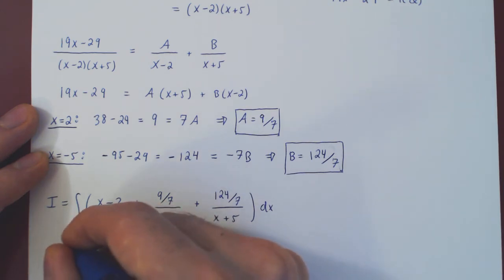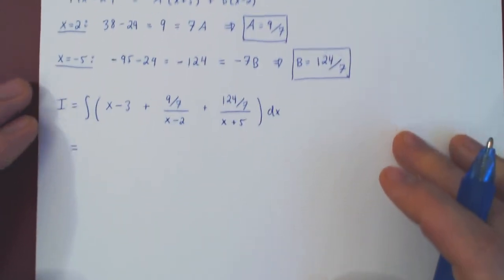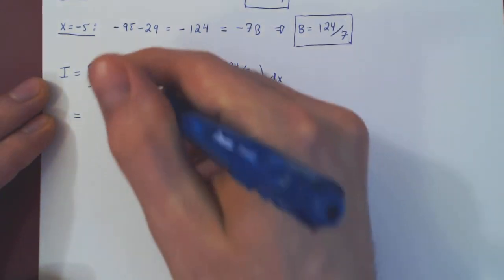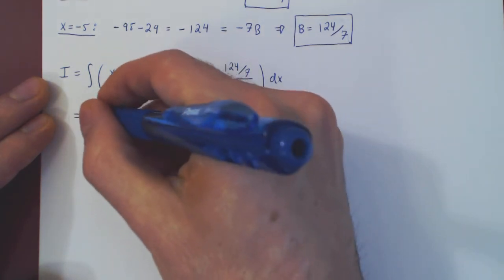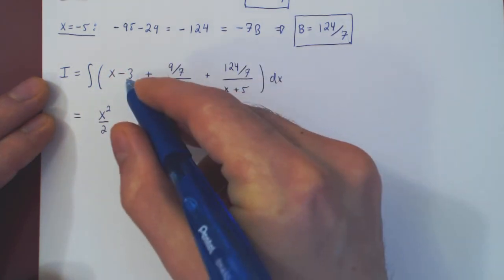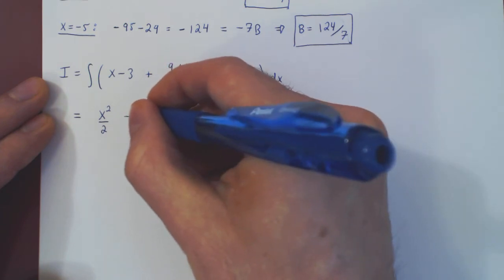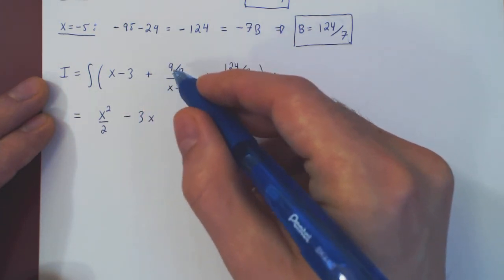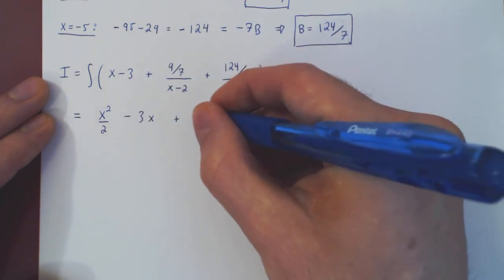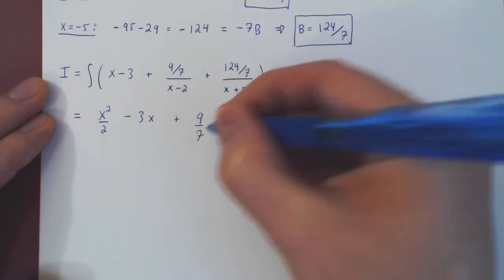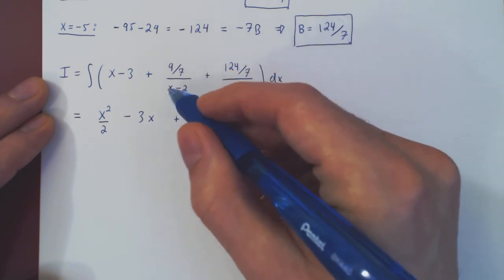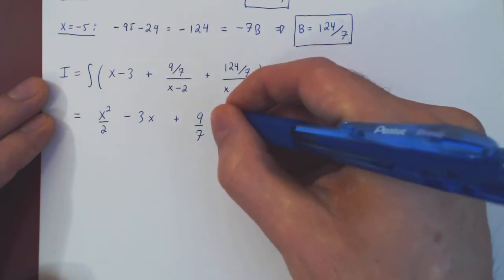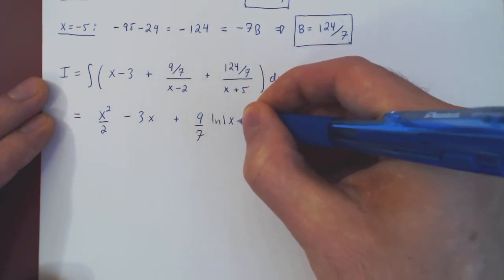And now the integration is going to be very straightforward. If you integrate x by the power rule, you get x squared over 2. If you integrate negative 3, you get negative 3x, plus the 9 over 7 can be factored out as a constant multiple. And you're left with the integral of 1 over x minus 2, which is the ln in absolute value of x minus 2.